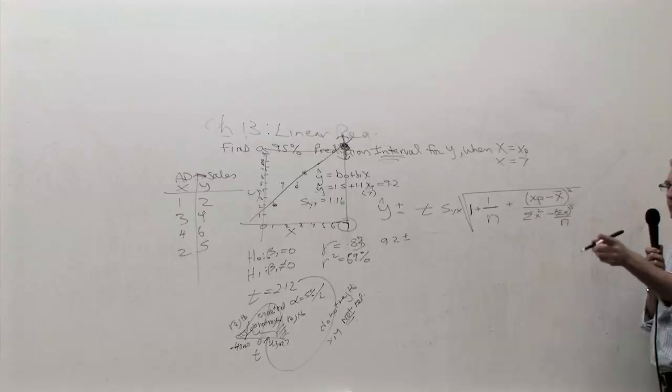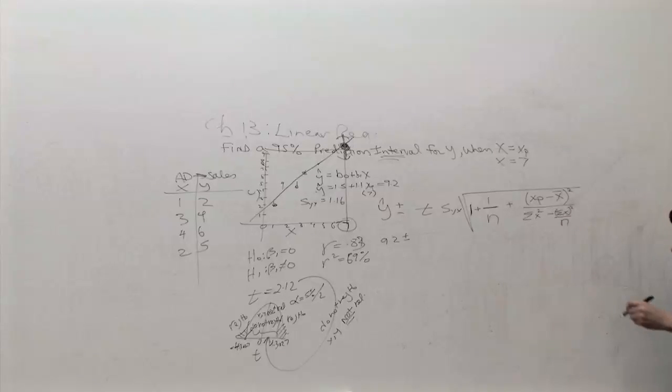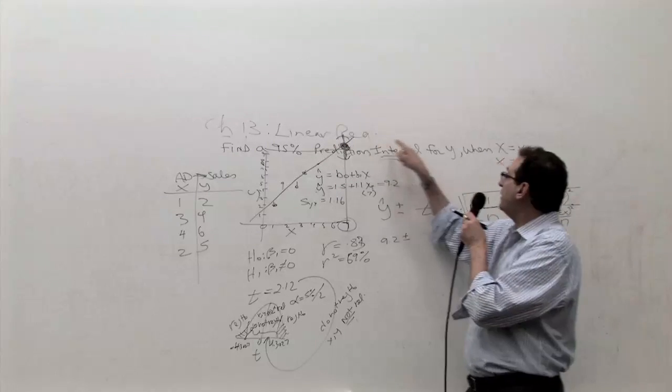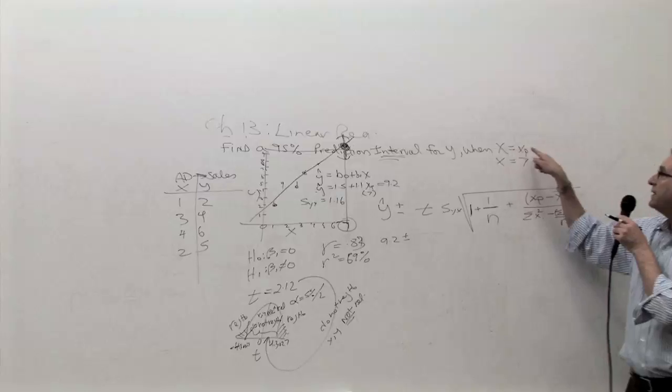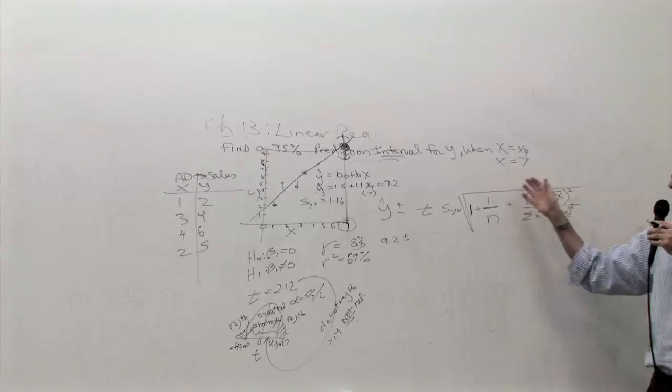So when you said, Paul, about these sums, the sums are here again. So this is it. This is your other major formula for the chapter. Now let's apply the formula. So let's find a 95% prediction interval for this particular data when x equals 7. So we've got to go through the following steps.